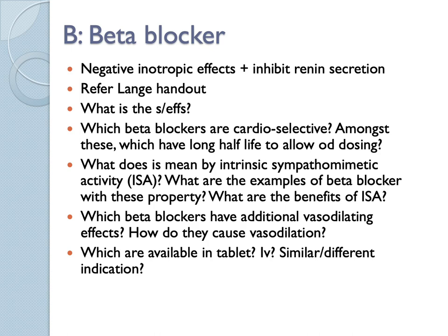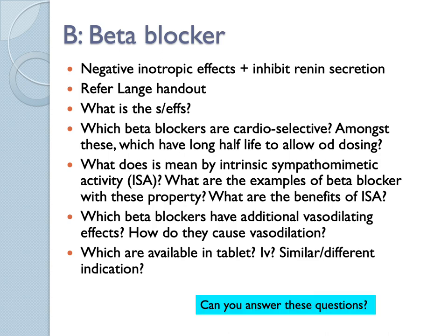The next group is B for beta blockers. The information here is not very complete as it's already covered in the peripheral nervous system class — please look through the Lange book or the BNF. Beta blockers are a giant group with lots of examples. You should know which are cardioselective, which have intrinsic sympathomimetic activity, and so on. Doses can differ under different conditions. Basically, beta blockers have negative inotropic effects — reducing heart contractility and heart rate — and also inhibition of renin secretion.